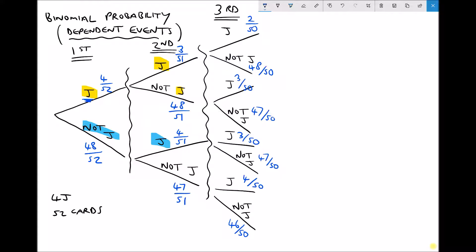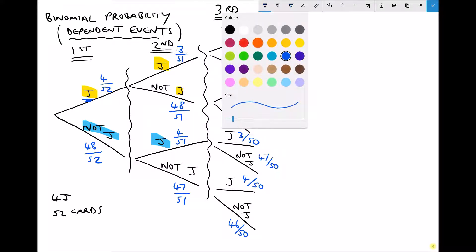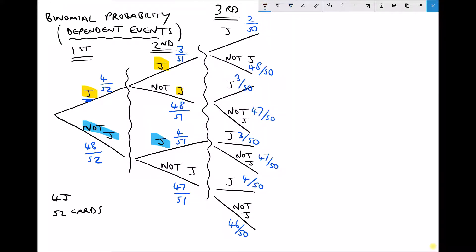Now I asked the question: what is the likelihood of getting two jacks? Exactly two jacks. So let's highlight our branches. Two jacks: we could get a jack, then a jack, then a not jack. Or we could get a jack, a not jack, and then a jack. Let's just put a star next to these branches. Now if our first card is not a jack, then we would need to get a not jack followed by a jack and a jack. And that is all of our options for getting two jacks in three cards.